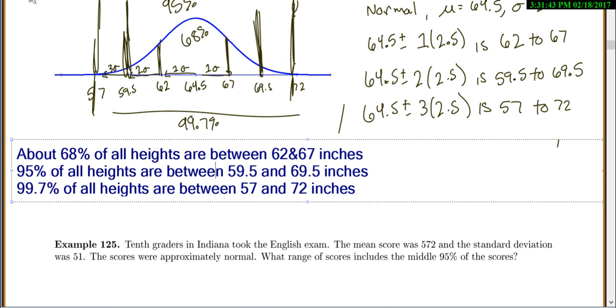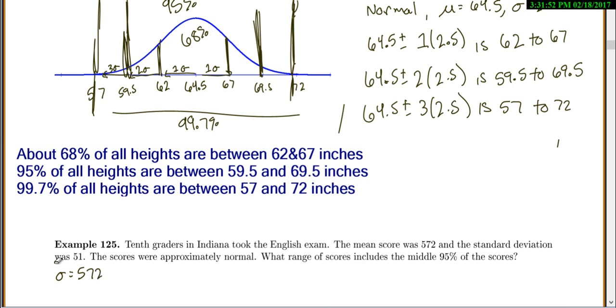In our next example now, we have 10th graders in Indiana took the English exam. The mean score is 572. So that means mu equals 572. The standard deviation is 51. So sigma equals 51. Pay attention to whether they say standard deviation or variance. You write down the right one. The scores were approximately normal. So now we know it's normal.